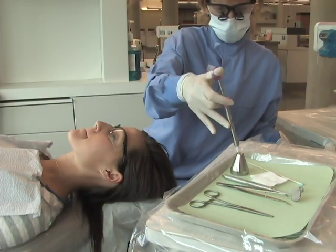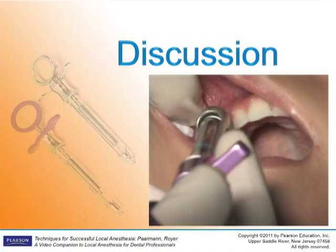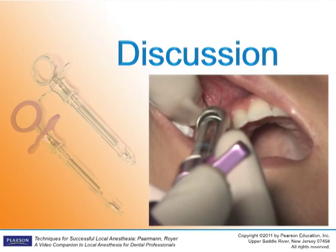Potential complications from this injection are minimal. There is the possibility of discomfort if periosteum is contacted; be sure to stay parallel with the long axis of the tooth to avoid touching the periosteum. Ballooning of tissue may occur in this region, and it is also possible to see some hemorrhage at the site of penetration. Incomplete anesthesia can occur at the midline with the ASA as a result of cross or overlapping innervation of terminal nerve fibers from the contralateral side. To achieve adequate anesthesia in these instances, administer an infiltration over the central incisors of the same side.